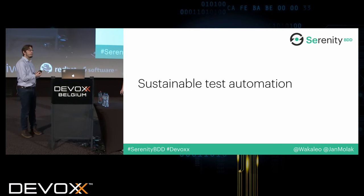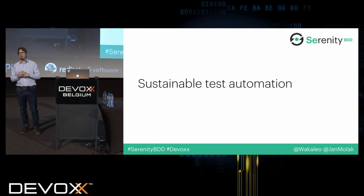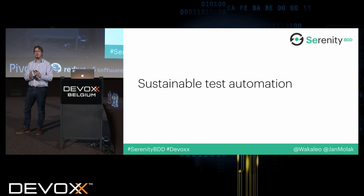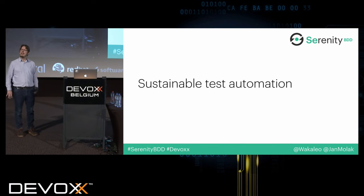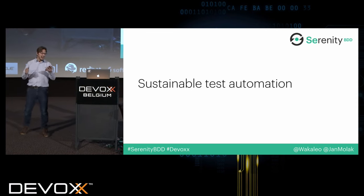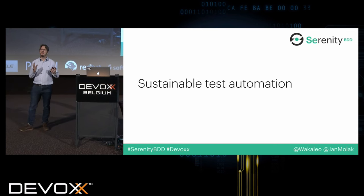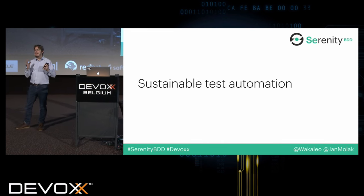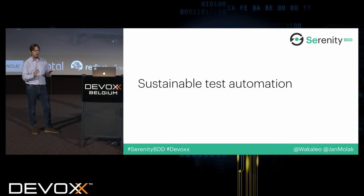One of the big principles behind this whole process is that what we find in a lot of teams we go into is when they do test automation it becomes a bit of a chore. It becomes a fairly high maintenance problem — something that takes a lot of effort to maintain. The tests can become fragile, difficult to maintain, difficult to extend, and it ends up taking more effort to keep track of and maintain the tests than the value you're getting out of them.